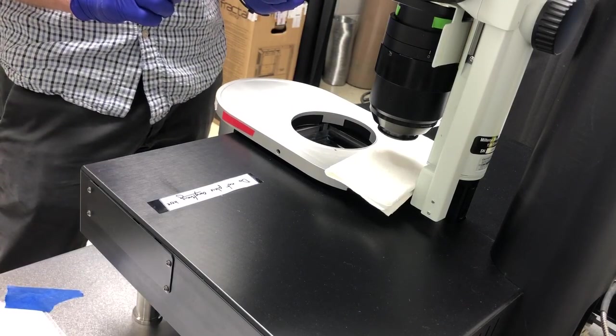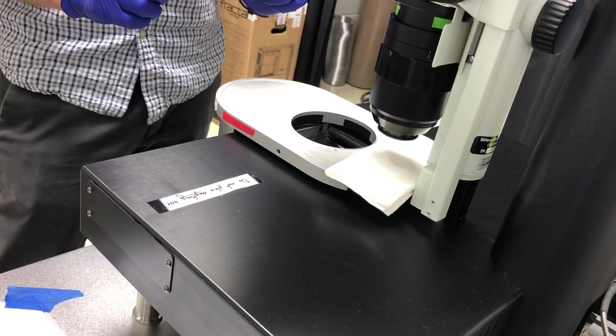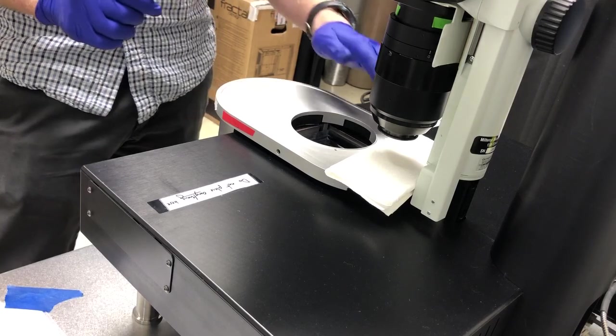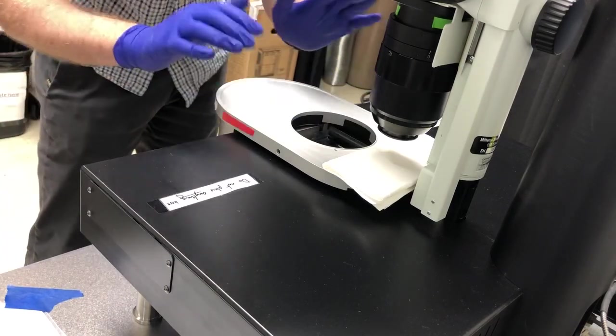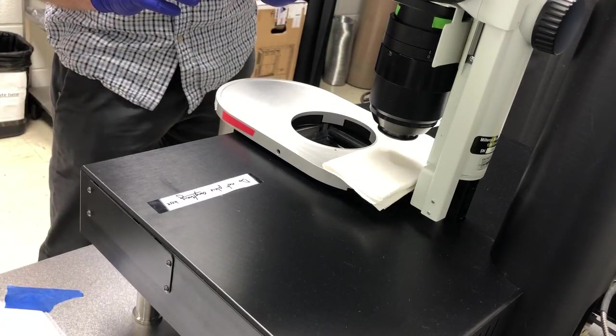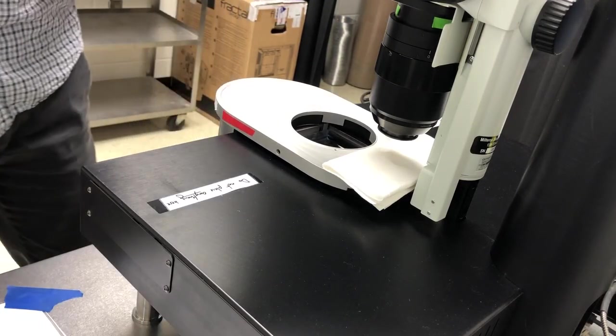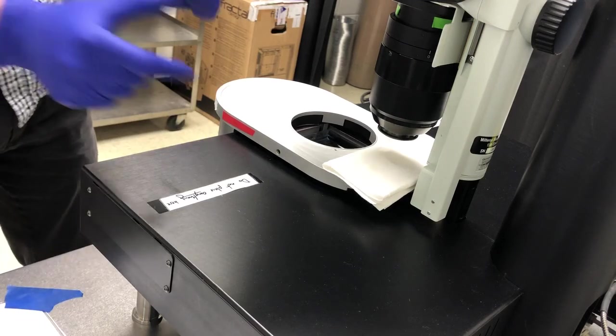The next step is to moisten a paper towel with ethanol and clean off any DBE from the stage or the gray stage plate. So you want to make sure there's no DBE here. I don't see anything. So that's great. I don't need to do that step.